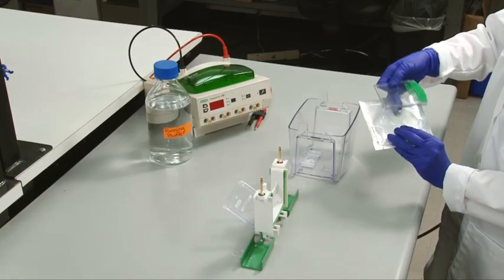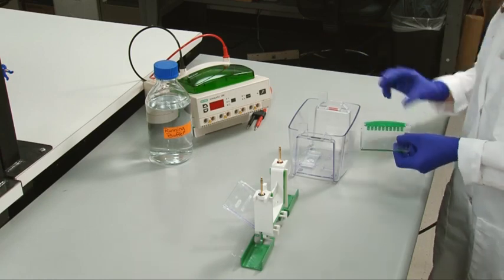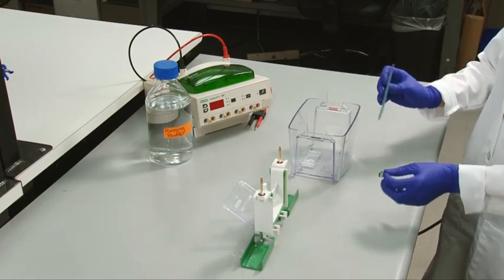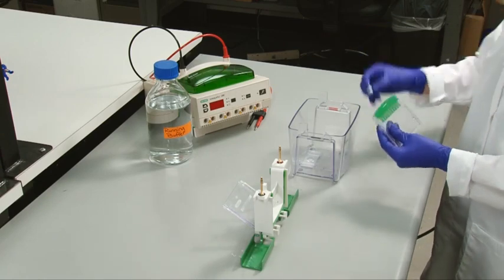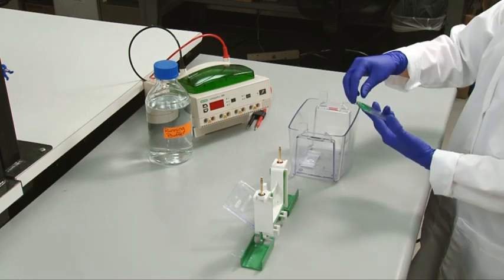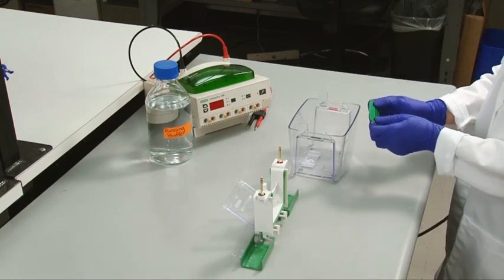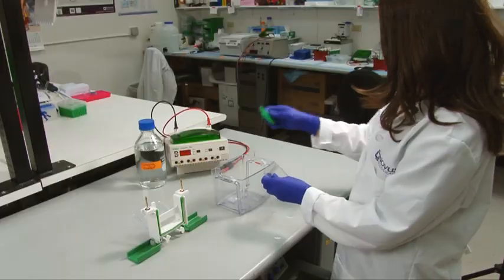To do this, we load our previously prepared protein samples into a commercially available polyacrylamide gel. Gels are available in fixed percentages or gradients of acrylamide. The higher the acrylamide percentage, the smaller the pore size of the gel matrix.